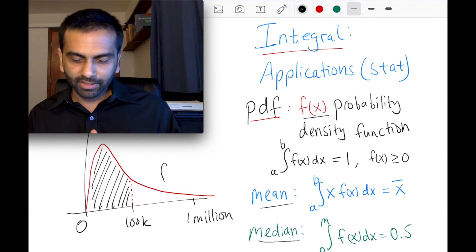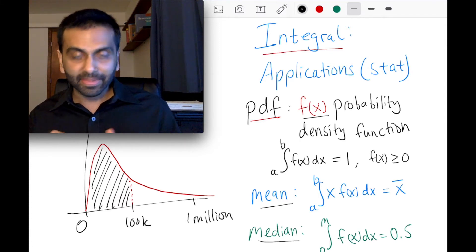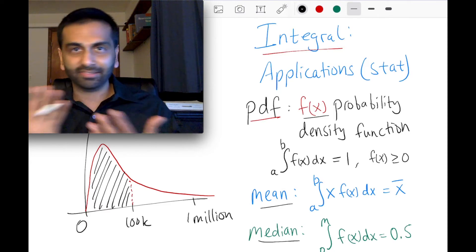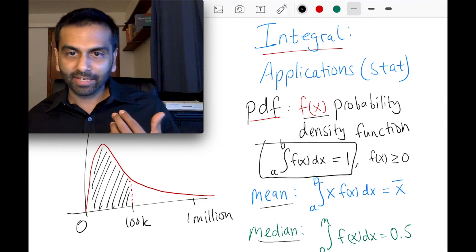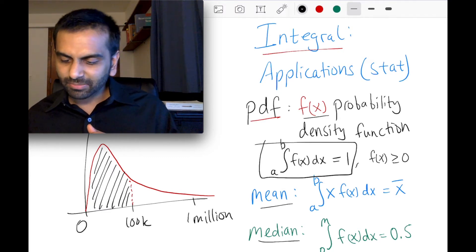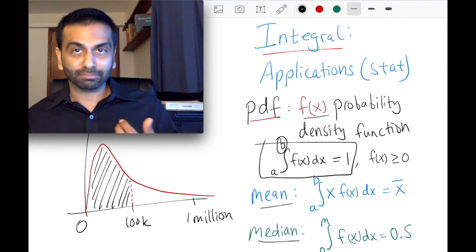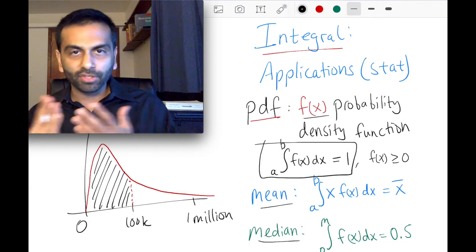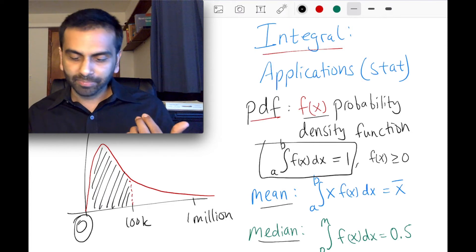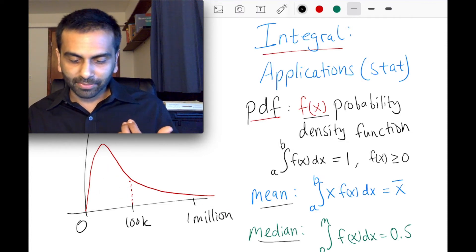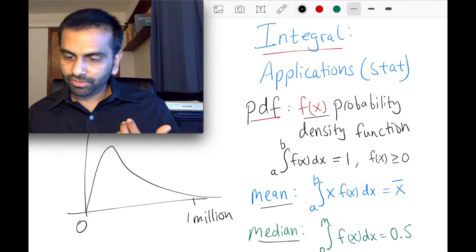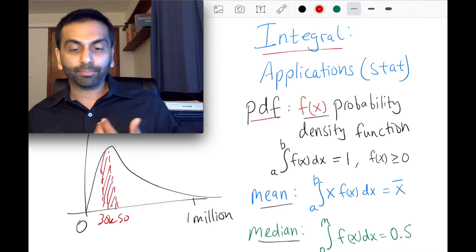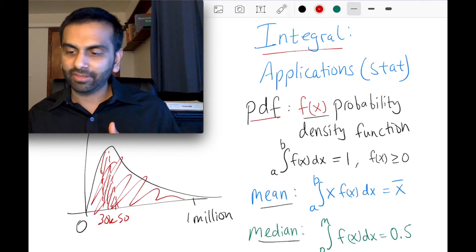One important implication is that the total area underneath the PDF from start to finish has to equal 1. That gives us the integral-based definition of the PDF: the integral of the PDF from A to B, where A is the lowest possible value and B is the highest possible value, equals 1. So 100% of people have incomes between 0 and 1 million. Similarly, you could ask what percentage of people have an income between, say, $30,000 and $50,000 — you just integrate between those values, and that area gives you that probability.